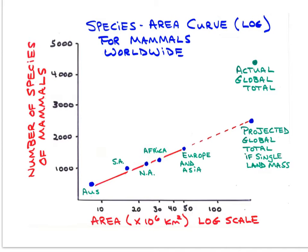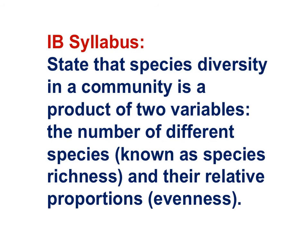I'll strengthen this concept in the next movie, Biodiversity Conservation Part 2. Here is an IB syllabus statement that digs into diversity as a concept and as a quantifiable ecological measure: state that species diversity in a community is a product of two variables — the number of different species, known as species richness, and their relative proportions, known as species evenness.